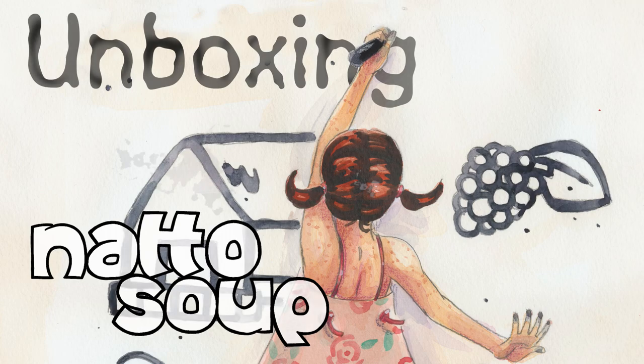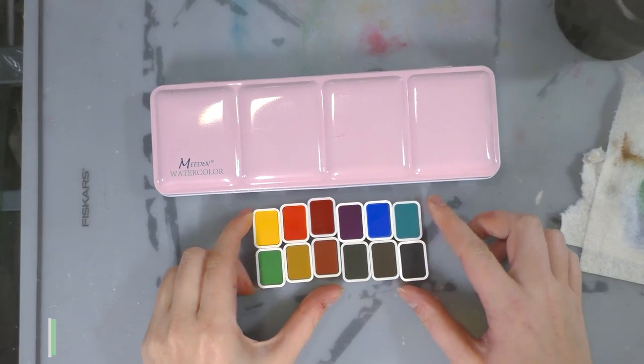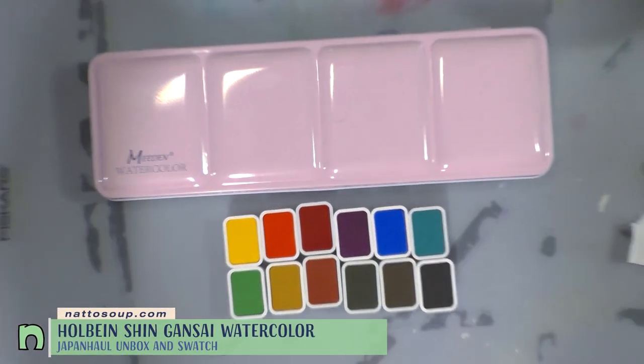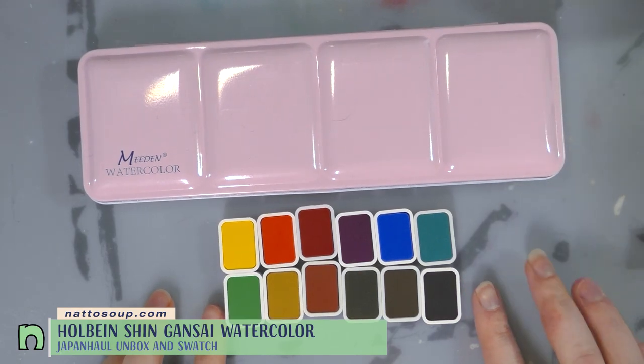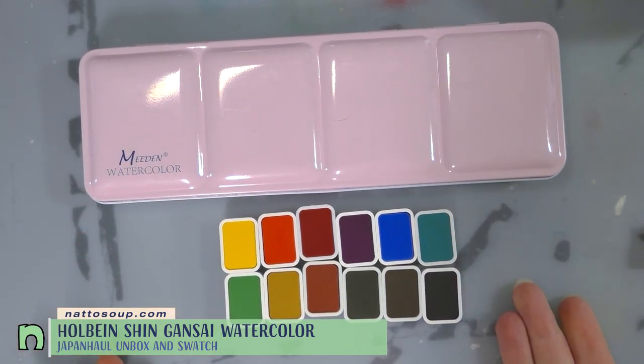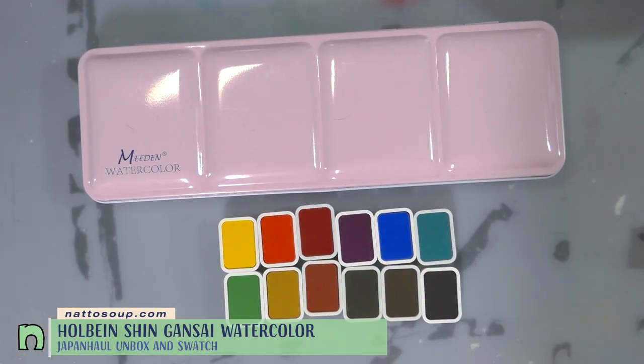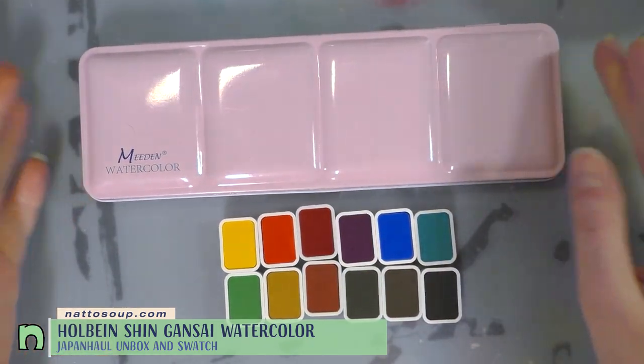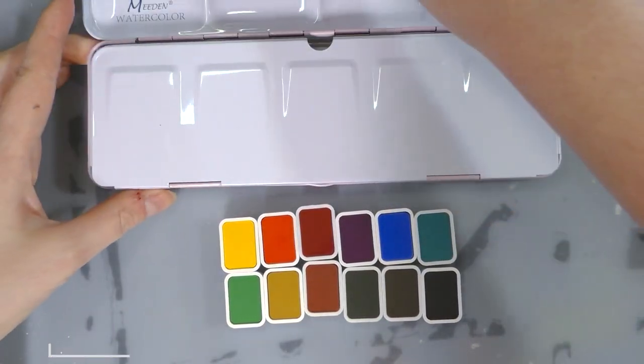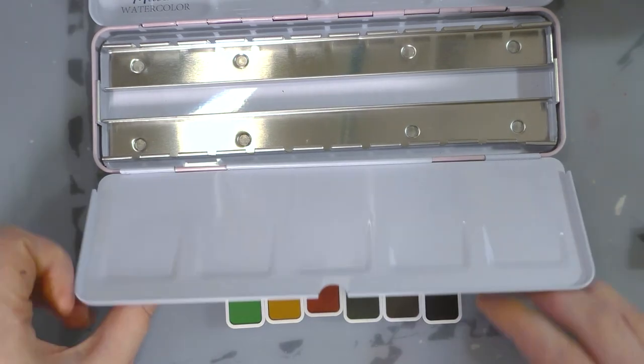So I picked these half pans up open stock from Sakaido in Tokyo and they are Shin Gensei watercolor. Now since they're open stock they didn't come with a palette, so I ordered a Meaden palette from Amazon because I am cheap and Meaden palettes are fairly inexpensive.